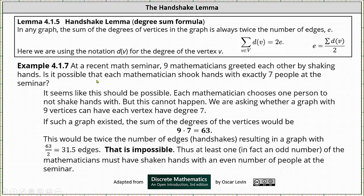It seemed like this should be possible. Each mathematician chooses one person to not shake hands with, but this cannot happen. We are asking whether a graph with nine vertices can have each vertex with degree seven.